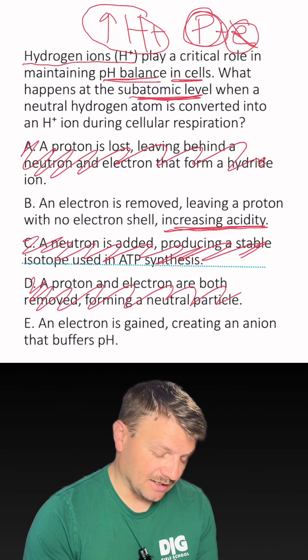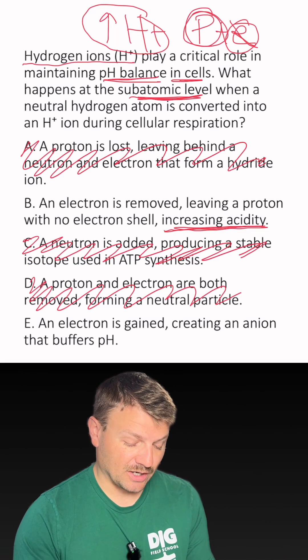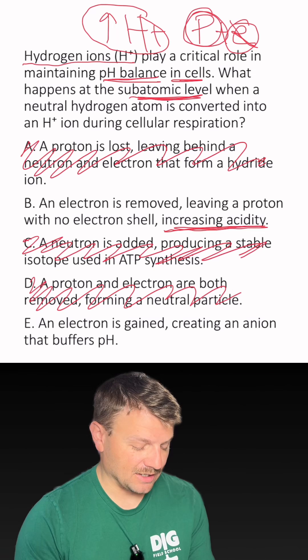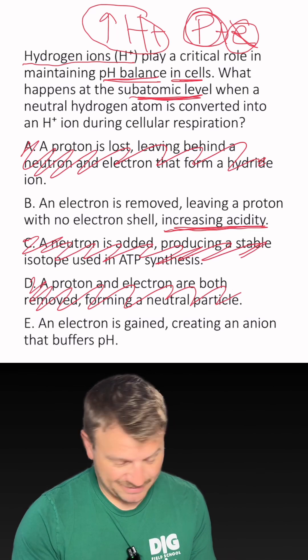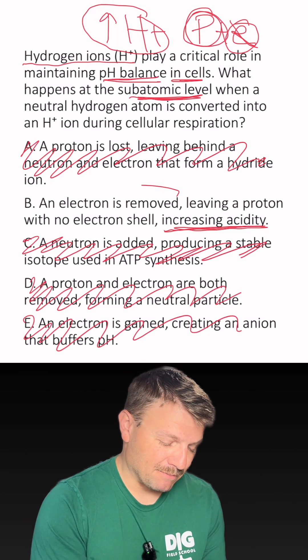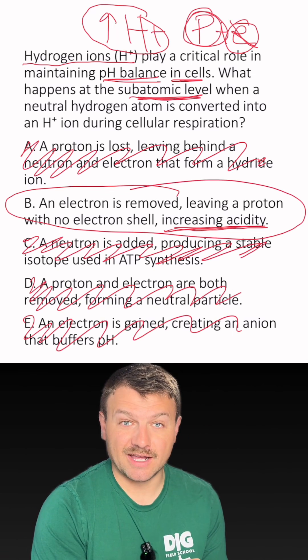And our last answer, E, an electron is gained creating an ion that buffers pH. There are some words there that deal with this, but no, it's not the answer, so E is out. And B is the right answer.